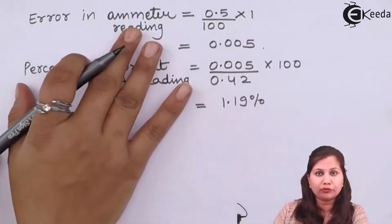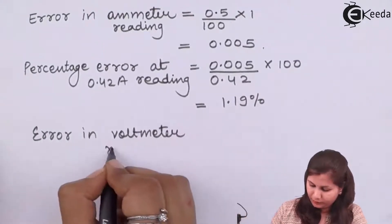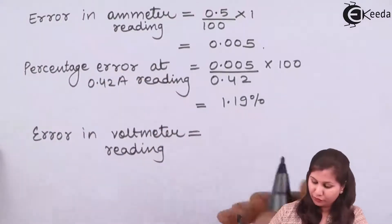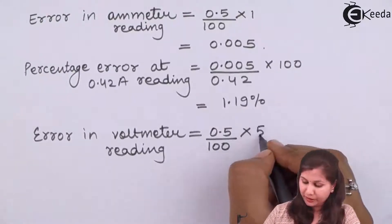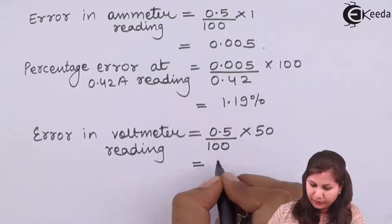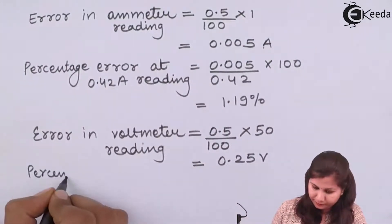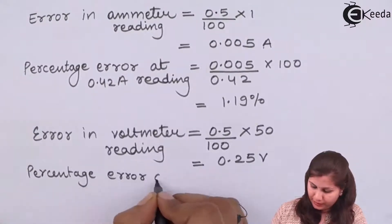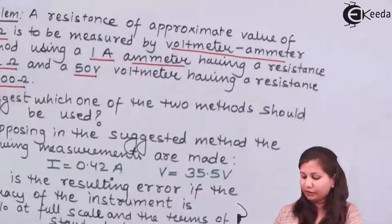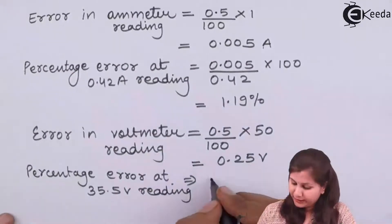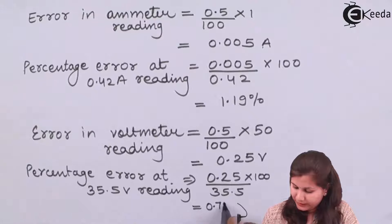Similarly for the voltmeter, the error is again 0.5 percent of the full scale, so 0.5 divided by 100 times 50 volts, giving an error of 0.25 volts. The percentage error at the 35.5 volts reading is 0.25 divided by 35.5 into 100, which comes out to be 0.704 percent.